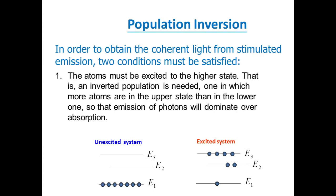In population inversion, more electrons will be in the upper state than in the lower state, which we refer to as the ground state, so that the emission of photons will dominate over absorption. If more electrons are in the excited state, then emission will be more dominant.